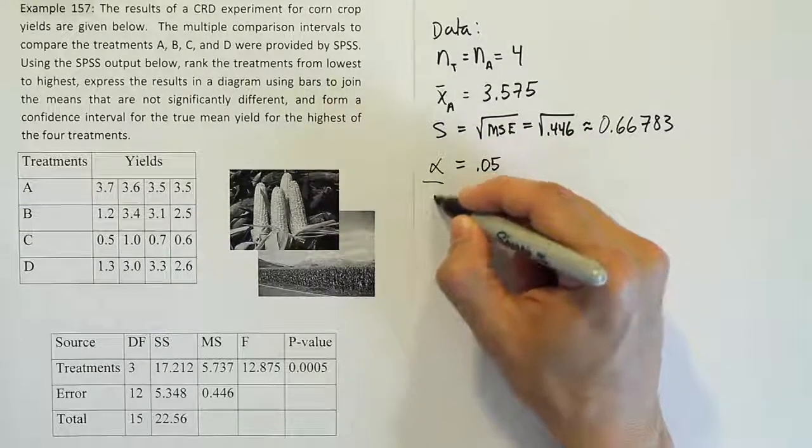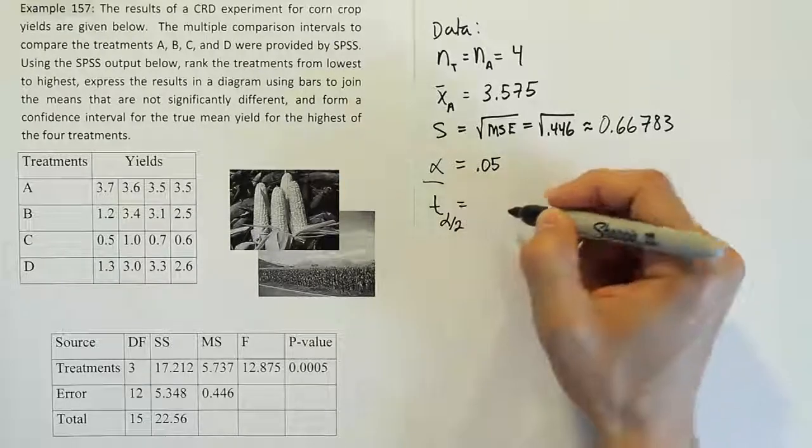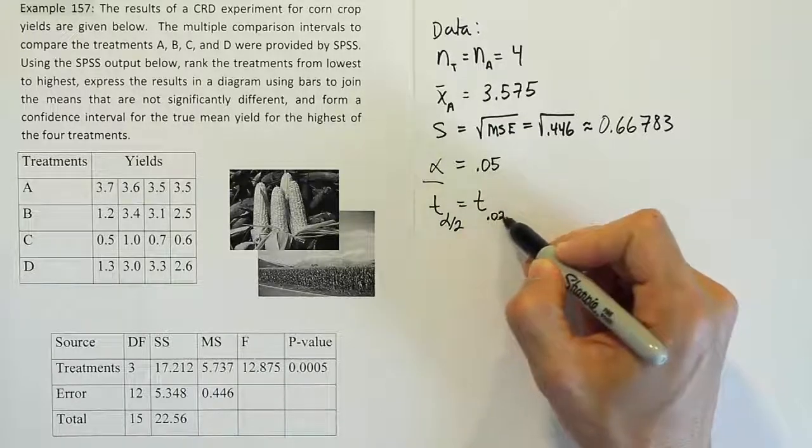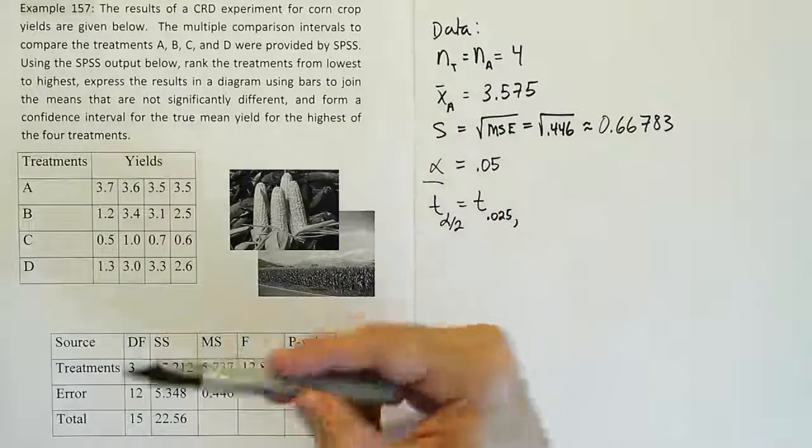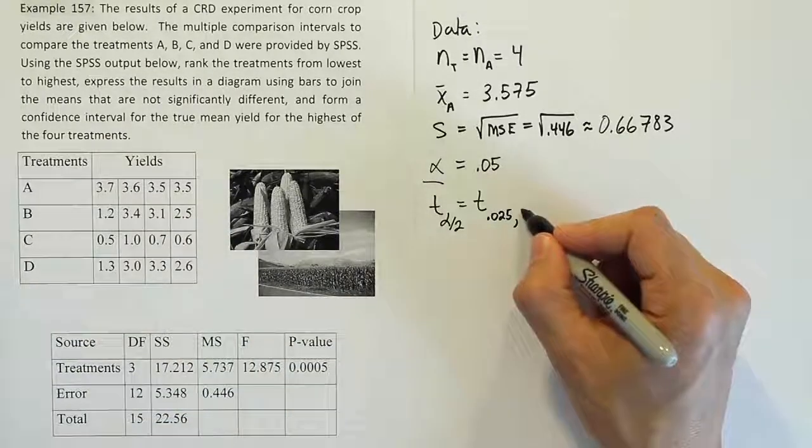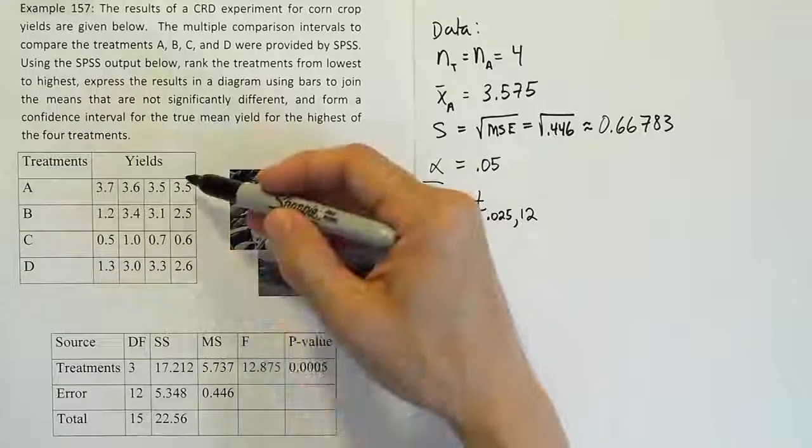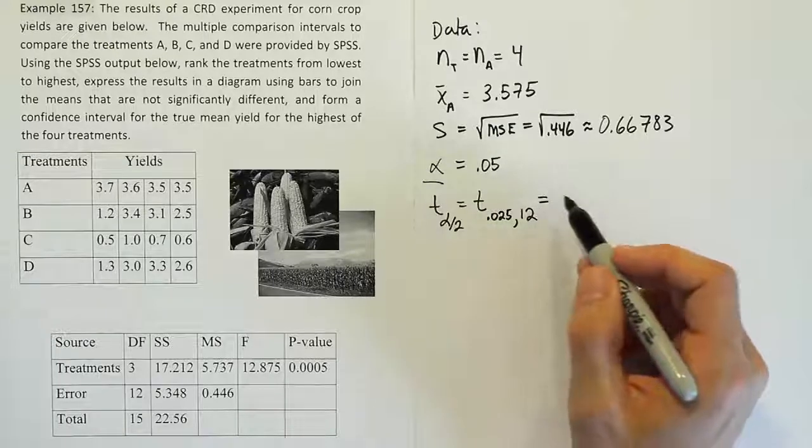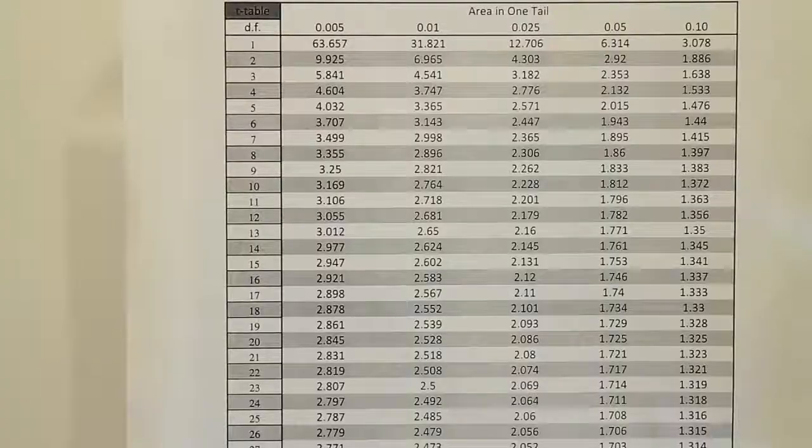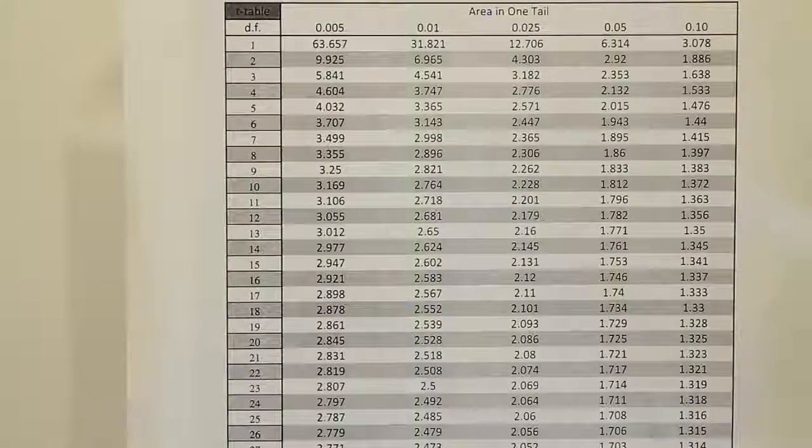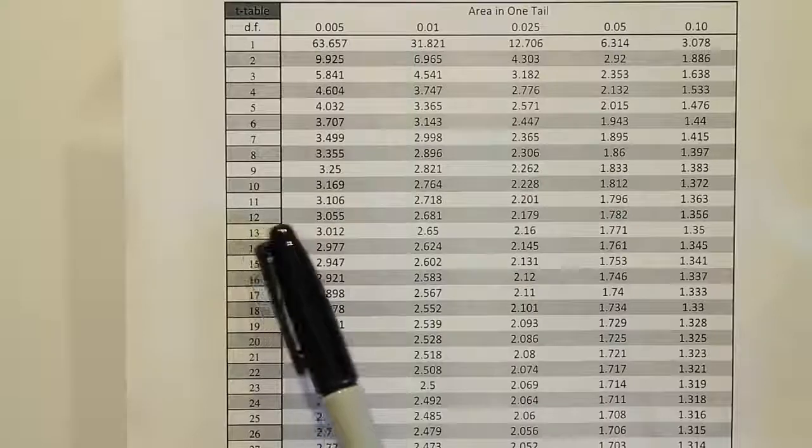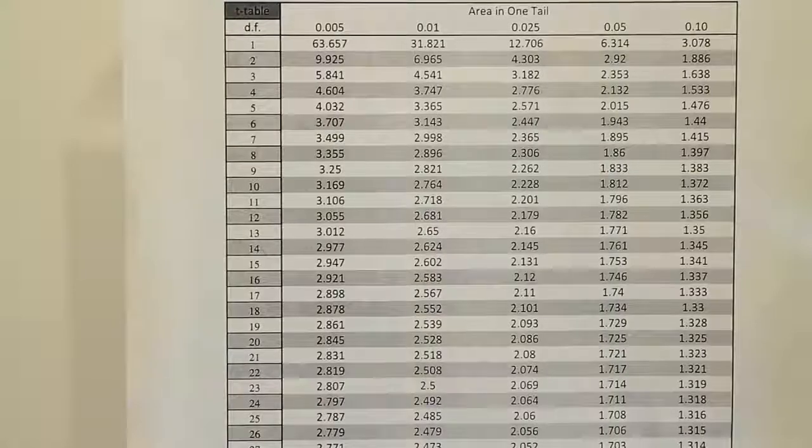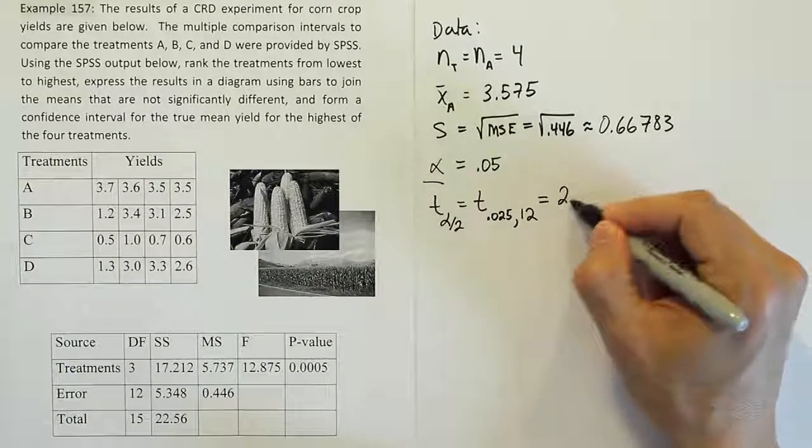Alright, next step is to get our critical value. Our critical value is T alpha divided by 2. Now in this case, we need degrees of freedom. So let's write it out. Alpha divided by 2 here would be 0.025. And remember, degrees of freedom, we're going to just take the error degrees of freedom. That's the same number as we have for this N minus K. So the number of values here minus the number of treatments, we get 12. Alright, let's go to our table and look that up now, and we'll have our critical value for our confidence interval. So we're looking in the 0.025 column and down to 12 degrees of freedom. So when we do that, we find the answer 2.179.